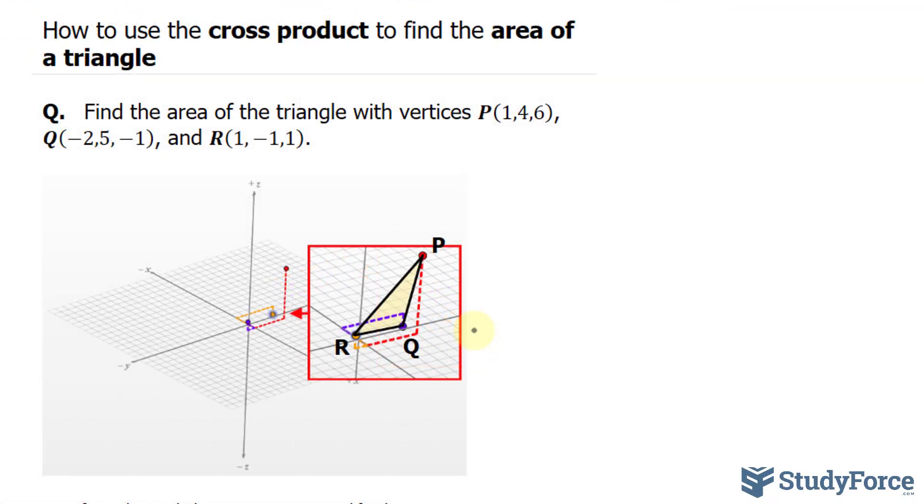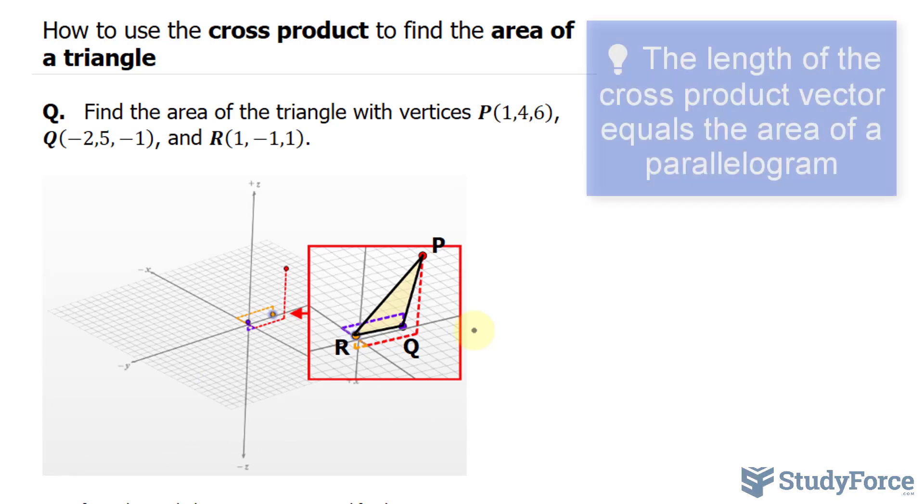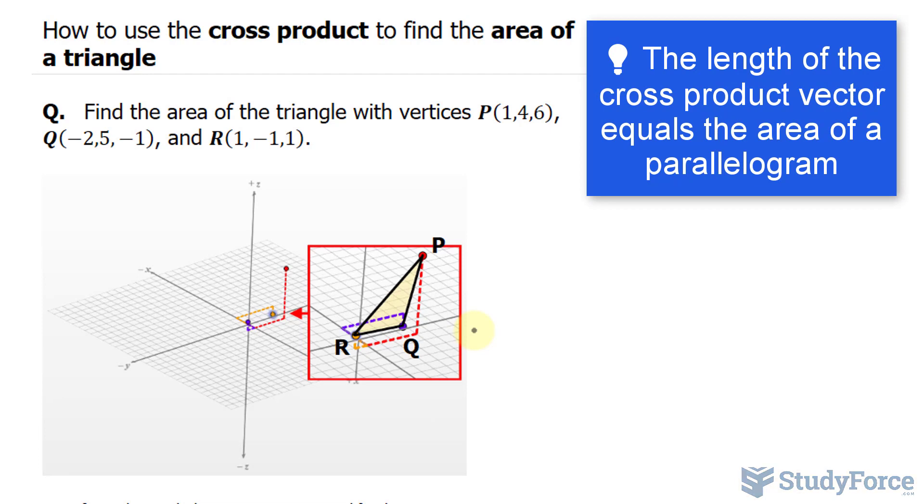Now in our previous video, we learned that if you take the cross product of two vectors, you end up with a third vector that is perpendicular to the two vectors that you're finding the cross product of. What's also interesting about that vector is that if you find its length, it actually gives you the area of the parallelogram that the two vectors make in 3D space.